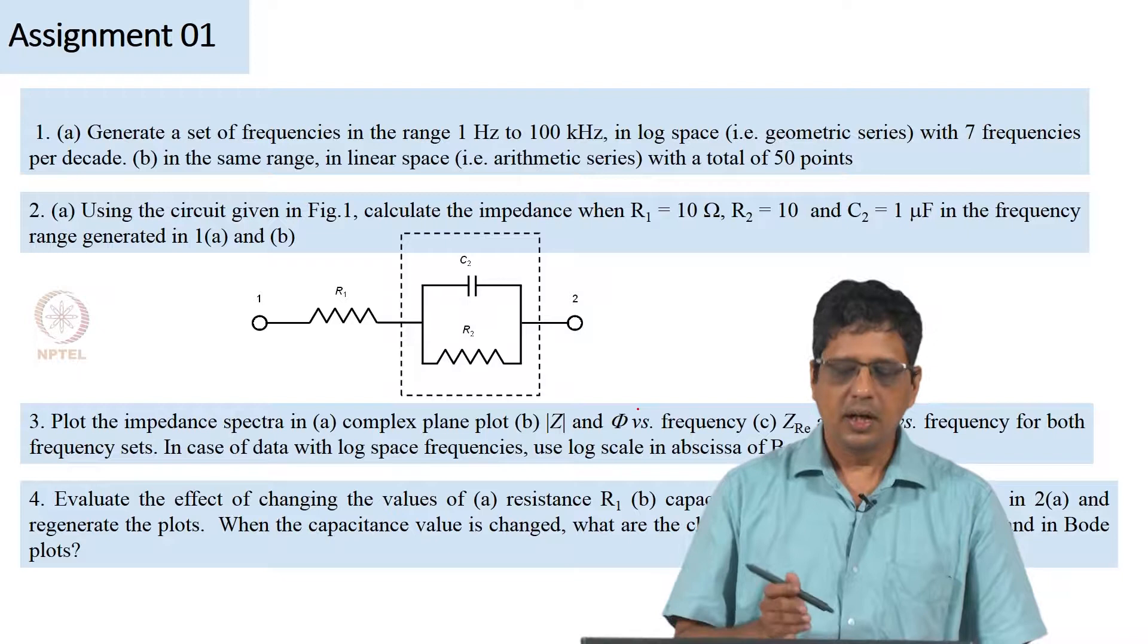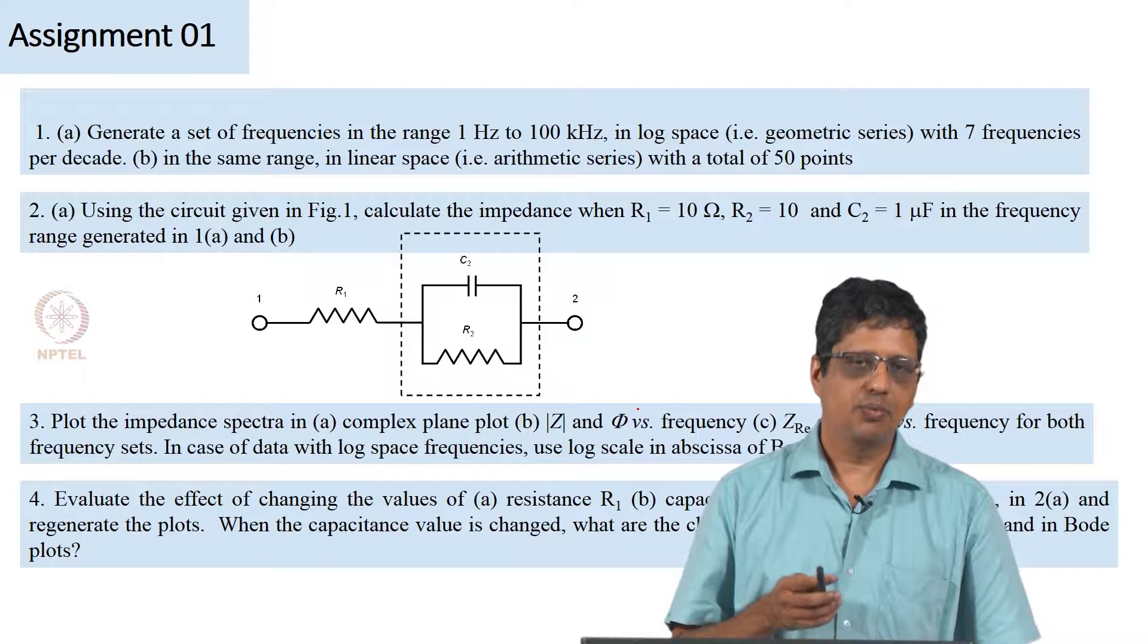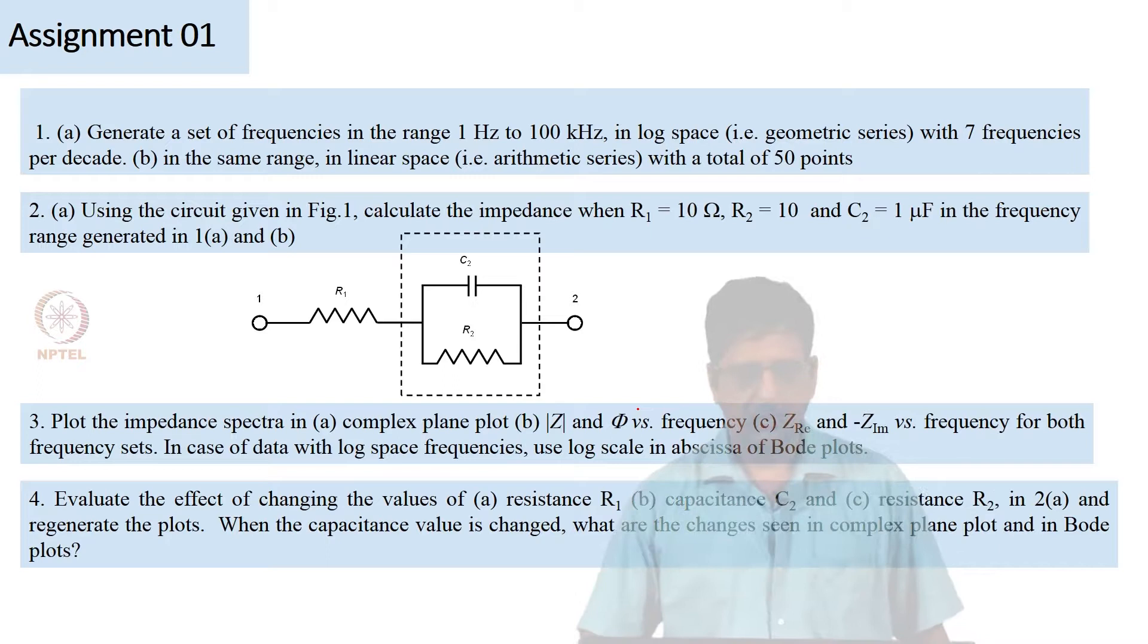And here the example is from 1 hertz to 100 kilohertz, many times you will have to take data from 1 millihertz or sometimes 100 microhertz to few kilohertz. So after plotting this, I also want you to see what happens if you change the resistance R1 from 10 ohms to 5 ohms or 20 ohms.